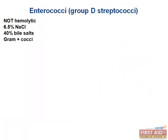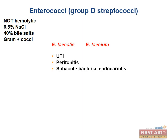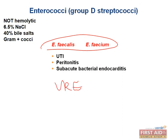The Enterococcus genus possesses the group D Lancefield antigen and can grow under extremely harsh conditions — 6.5% sodium chloride and 40% bile salts — which is why they survive as normal flora in the colon. Enterococcus faecalis and Enterococcus faecium are clinically relevant, mostly causing disease in hospitalized or immunocompromised patients: UTIs in catheterized patients, post-surgical peritonitis, and subacute bacterial endocarditis. Vancomycin-resistant Enterococci (VRE) is an increasing hospital problem, found in approximately 20% of E. faecium isolates.